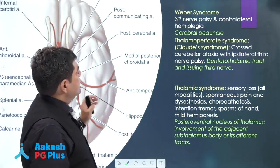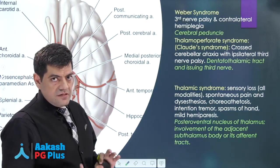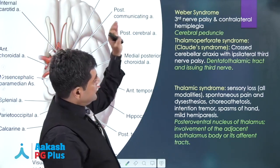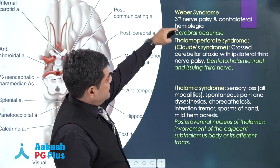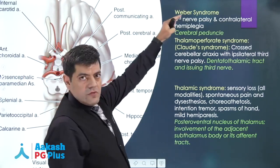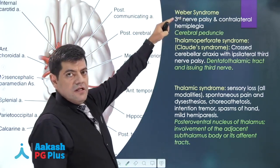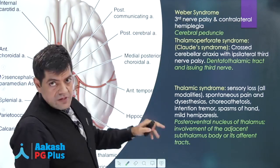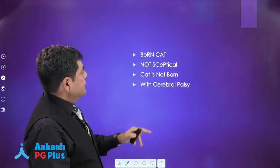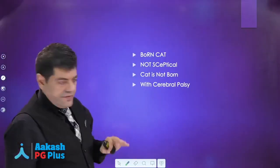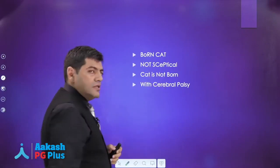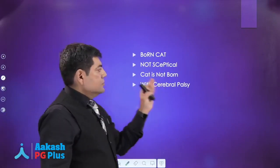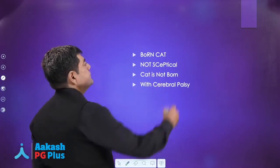One way of approaching those questions is to look at which part gets affected and therefore what would be the corresponding deficits. I have tried to simplify it for you with the mnemonic: 'born cat, not skeptical — cat is not born with cerebral palsy.'